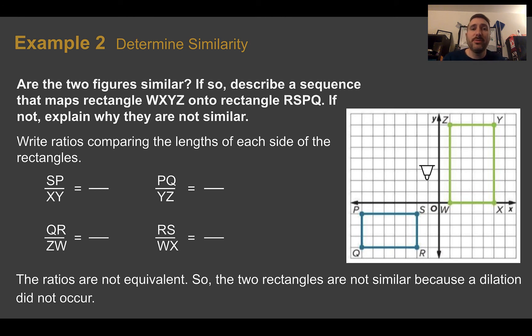Example 2, determine similarity. Are the two figures similar? If so, describe a sequence that maps rectangle WXYZ onto rectangle RSPQ. If not, explain why they are not similar. In similar figures, they have to be multiplied by the same scale factor each time. Otherwise, it's like it stretched it one way but not the other. You want to drag it by the corner so it enlarges or shrinks in both directions at the same time. When we do that, the ratios and the scale factor end up being the same every time. So if we check the scale factor, if it's the same scale factor everywhere, then it's similar. If it's not the same scale factor everywhere, or the same ratio, then it is not similar.